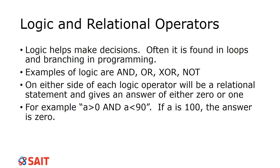AND means that both situations must be true for the answer to be 1. So 'a greater than 0 AND a less than 90' — if a is 75, then it is true. OR means only one of them has to be true. If I say 'a greater than 0 OR a less than 90' and a is 100, the answer is 1 because 100 is greater than 0, even though it is not less than 90.